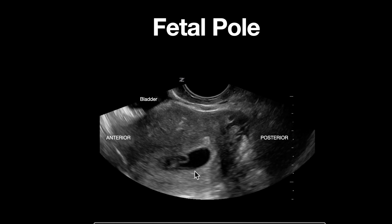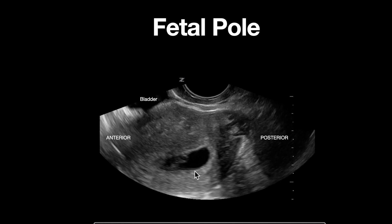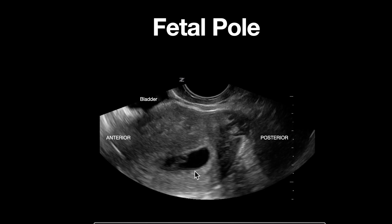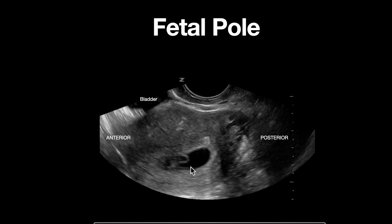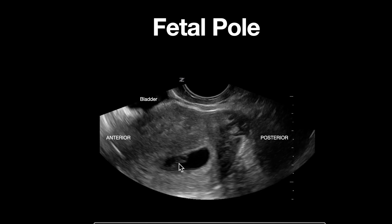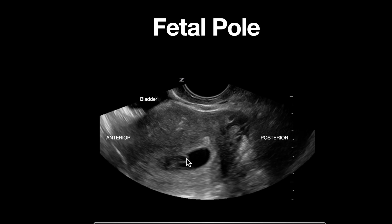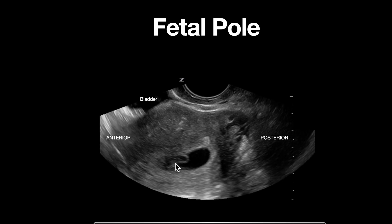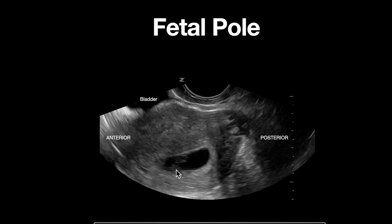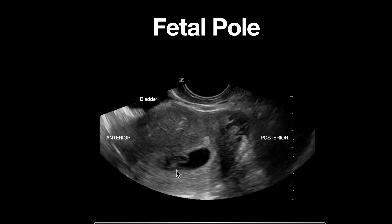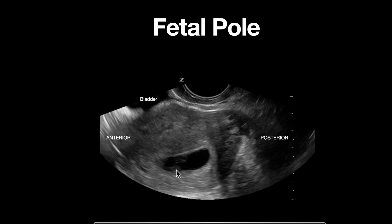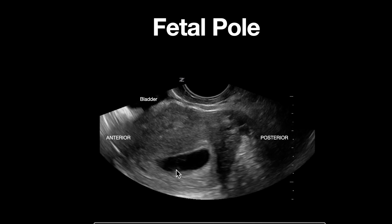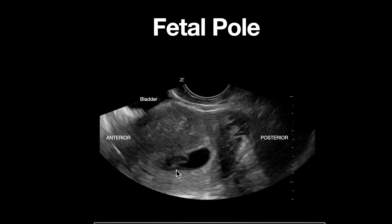We know that this is a gestational sac because we see the presence of two markers of a definitive IUP. A circular shape can be seen here, which is consistent with the yolk sac, and just abutting it we can see an isoechoic structure which is our fetal pole. Notice a flickering movement can be seen in the middle of the fetal pole, consistent with fetal cardiac activity.